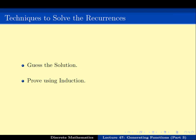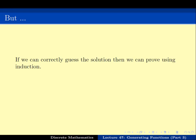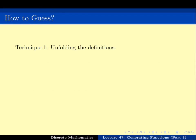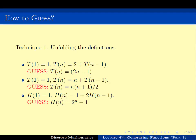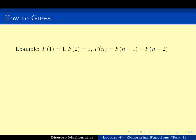One technique for solving recurrence relations is to first guess the solution and then prove it by induction. If you can guess correctly, proving by induction is quite straightforward. But the question is: how do we guess the solution? One technique we have looked at is unfolding the definitions, and using this we have managed to guess the solution for a number of them. But for recurrences like the Fibonacci sequence, the solution is quite hard to guess — and this is what we will be proving in this video.